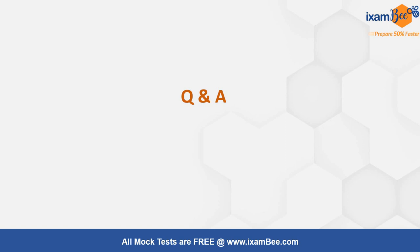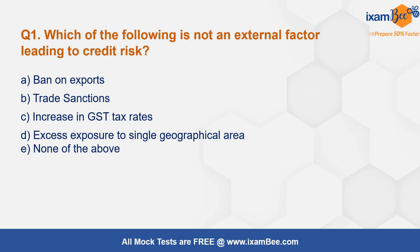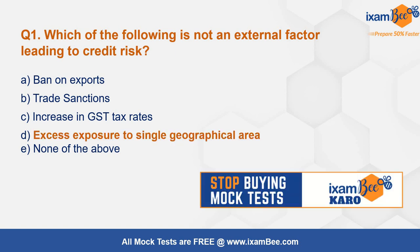Now let's move on to MCQs. First question: which of the following is not an external factor leading to credit risk? Options include: a ban on exports placed by the country, trade sanctions, an increase in the GST tax rate on a particular commodity, excess exposure to a single geographical area, or none of the above. The correct answer is excess exposure to a single geographical area — this is basically concentration risk and is an internal factor of the bank, not an external factor.